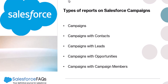It helps you understand which campaigns are converting and how much revenue they are bringing in. With this data you can optimize your marketing efforts and improve your overall strategy. The types of reports you can create on campaigns are: campaign report, campaigns with contacts, campaign with leads, campaign with opportunities, and campaign with campaign members.